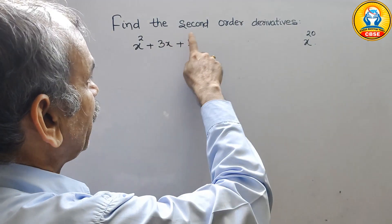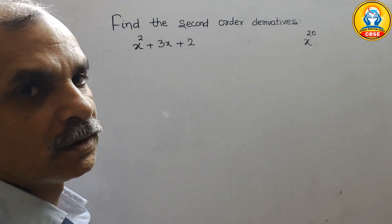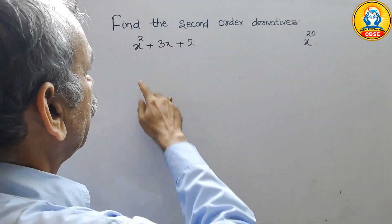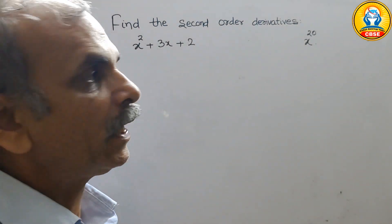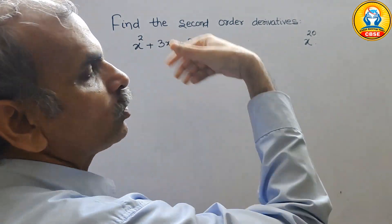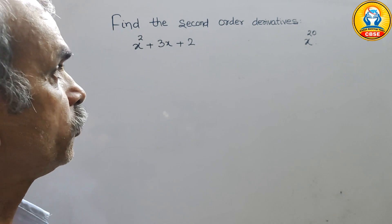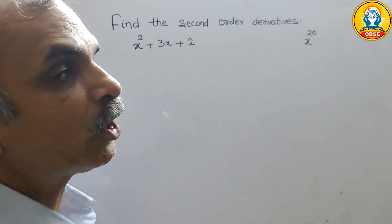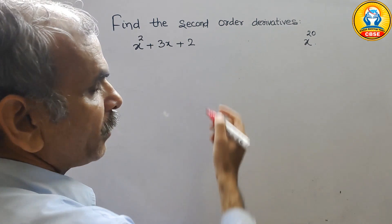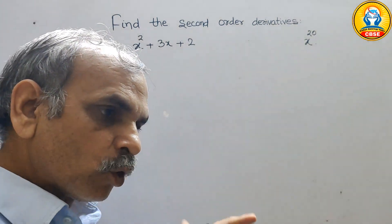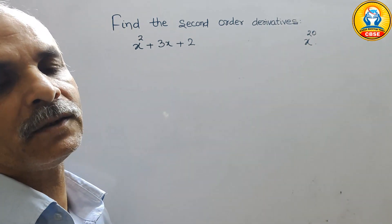The question is to find the second-order derivatives. They have given x squared plus 3x plus 2, and next x to the power of 20. Second order means we just have to go for double differentiation of that.